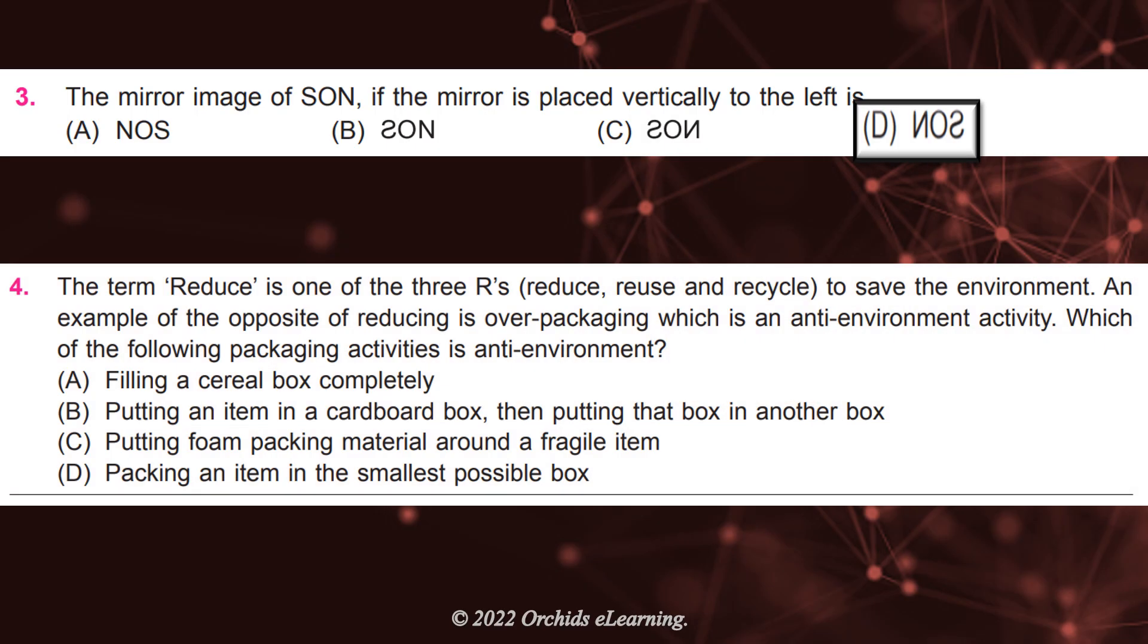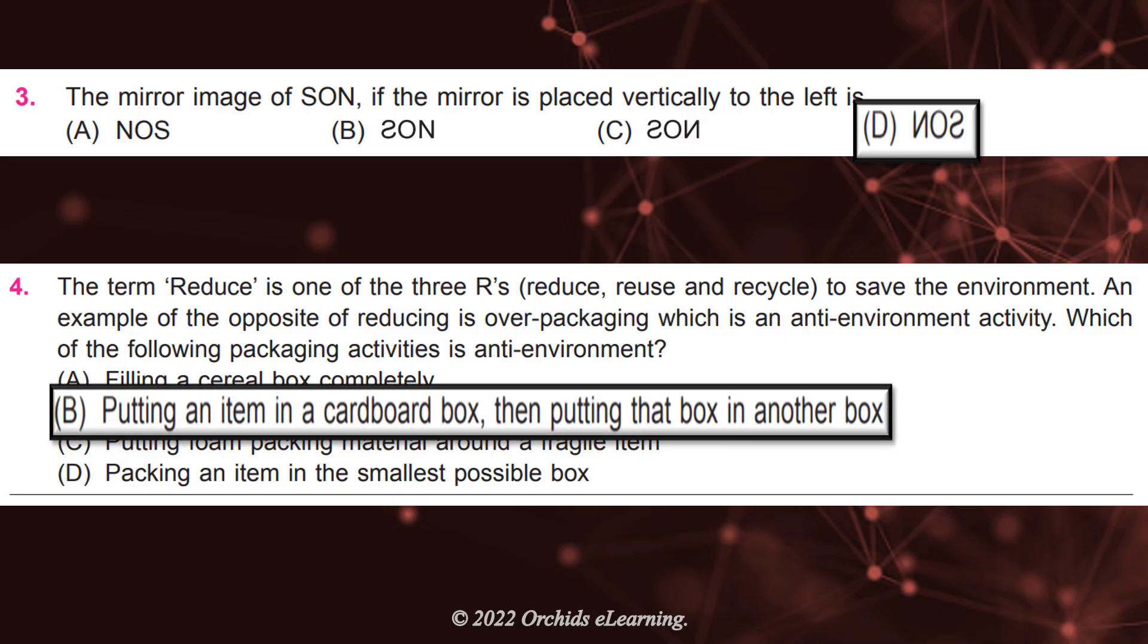The term reduce is one of the three Rs—Reduce, Reuse and Recycle—to save the environment. An example of the opposite of reducing is overpackaging, which is an anti-environment activity. Which of the following packaging activities is anti-environment? Answer: B, 22. Putting an item in a cardboard box, then putting that box in another box.